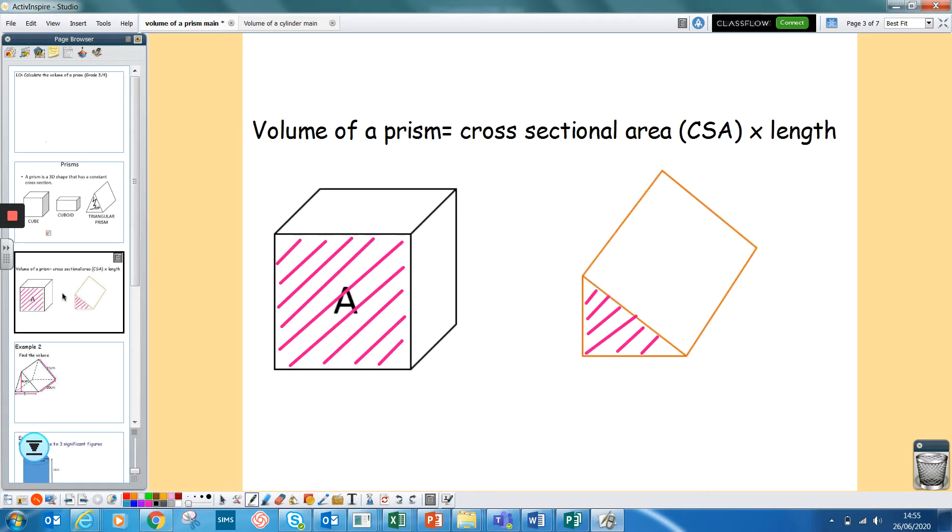So to find the volume of a prism, you find the area of the cross sectional area. So like these two bits here, you find this area and you times by the length, how long it is.